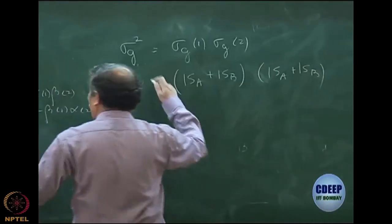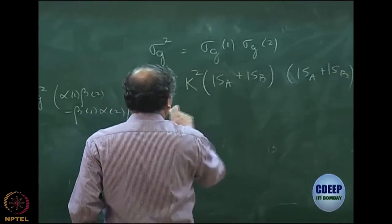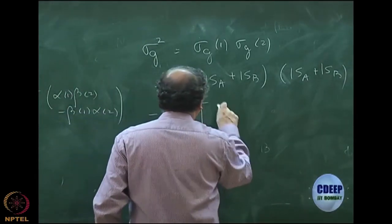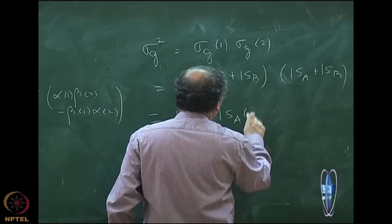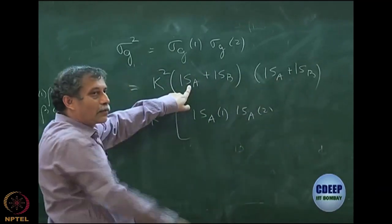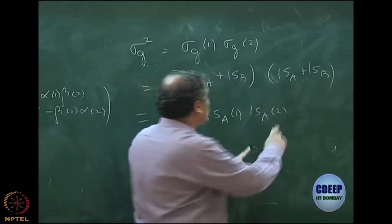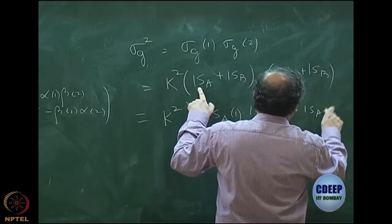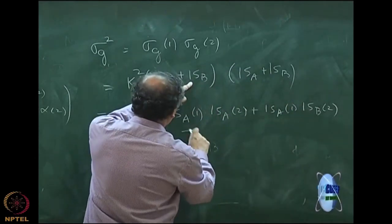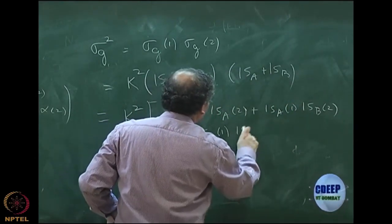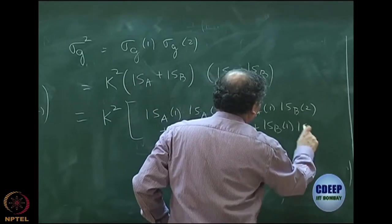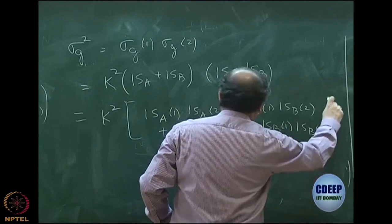Let us say that is constant k, so it is k square times 1. Let me now expand this further. I have k square into 1s_a(1) into 1s_a(2), plus 1s_a(1) into 1s_b(2), plus 1s_b(1) into 1s_a(2), plus 1s_b(1) into 1s_b(2).